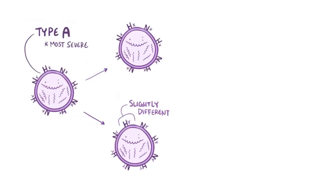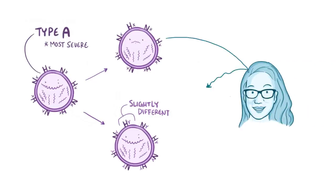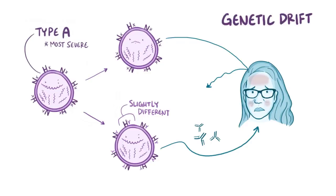Over time, if enough of these small changes happen, even if somebody is immune to the original virus, the mutated virus might have H and N glycoproteins that are different enough to allow it to evade antibodies, and therefore infect someone who is immune to previous strains. This process is called genetic drift, and is why individuals can get sick from influenza year after year, or from two different strains of influenza in the same year.